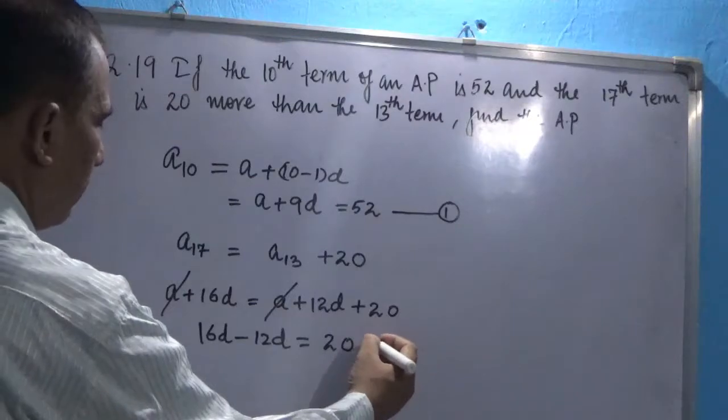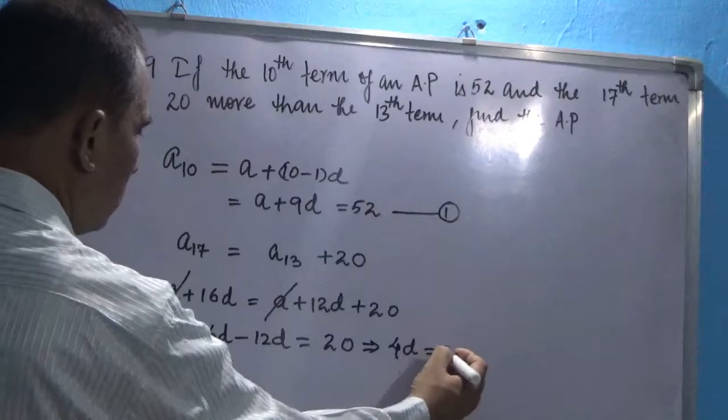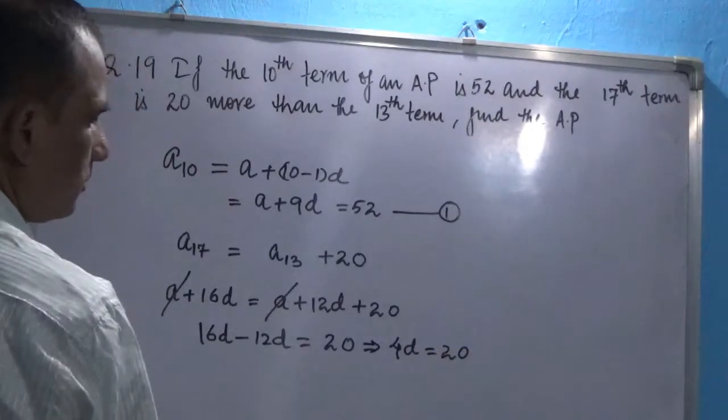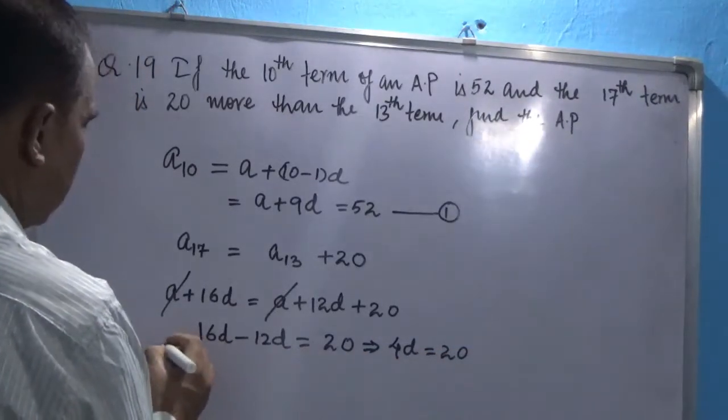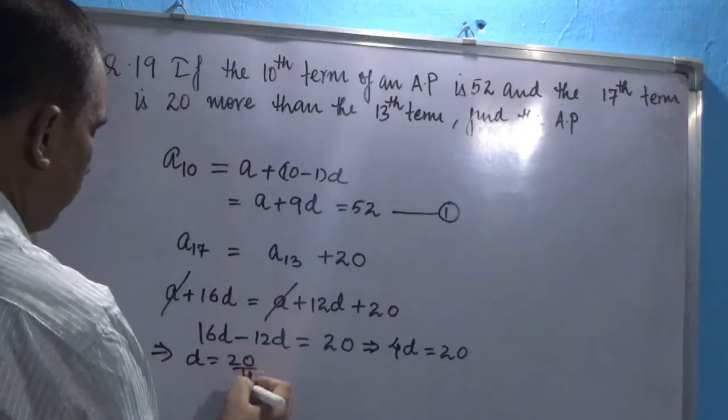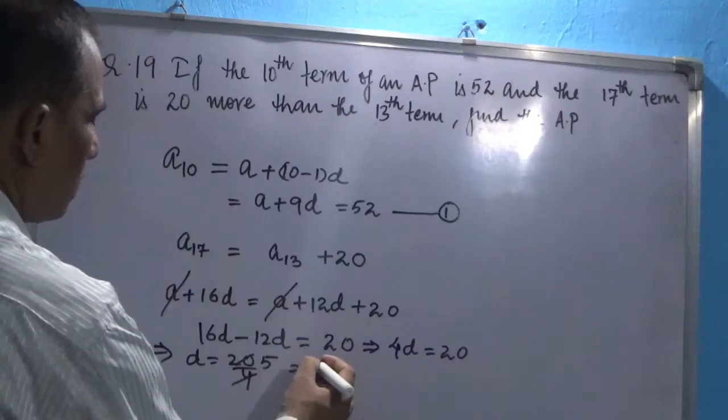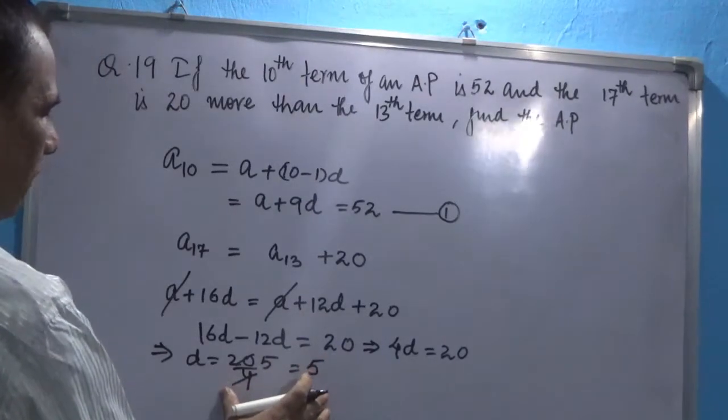And this will give us D equal to 20 by 4, that is 5. So we have got one value, D equal to 5.